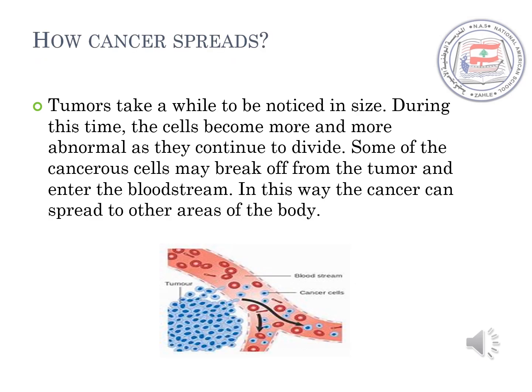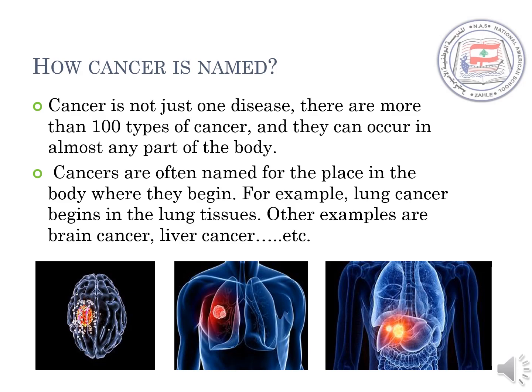How does cancer spread in our bodies? Tumors take a while to be noticed in size. During this time, the cells become more and more abnormal as they continue to divide. Some of the cancerous cells may break off the tumor and enter the bloodstream. In this way, the cancer can spread to other areas of the body. Cancer is not just one disease — there are more than 100 types of cancer, and they can occur in almost any part of the body. Cancers are often named for the place in the body where they begin. For example, lung cancer begins in the lung tissues. Other examples are brain cancer and liver cancer.